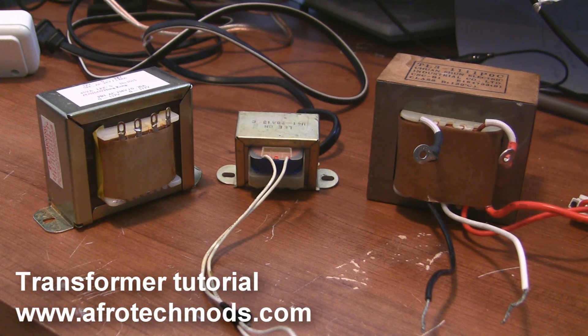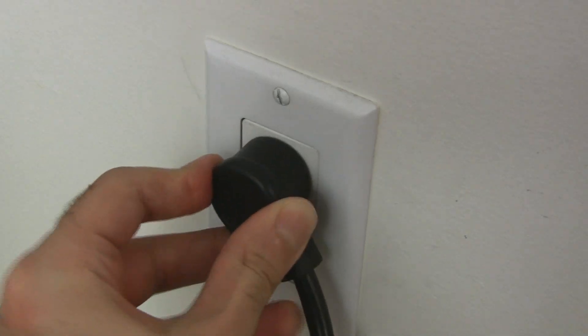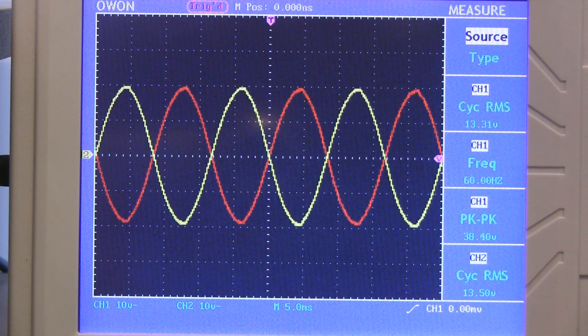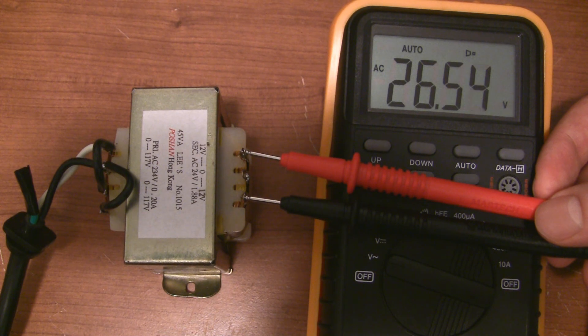In this video I'm going to explain how transformers work and show you how to wire one up to step mains voltages down to lower voltages that your projects may need. In my project we'll step down 120 volts to 24 volts, but the same principles will apply to most transformers.